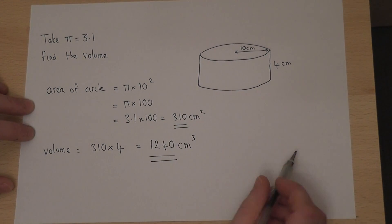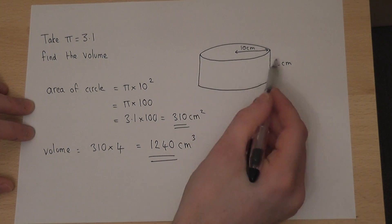So, in summary, we find the area, then times by the depth, and write down the volume using centimetres cubed.